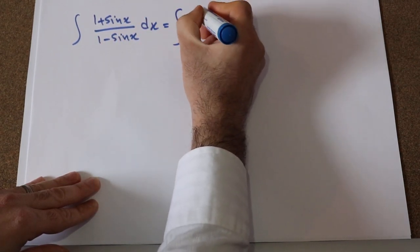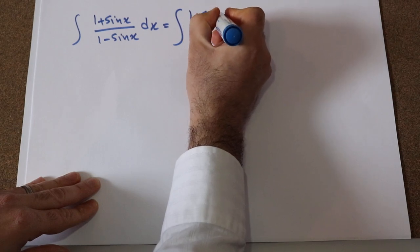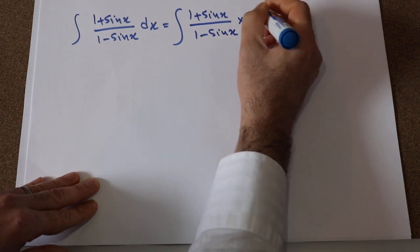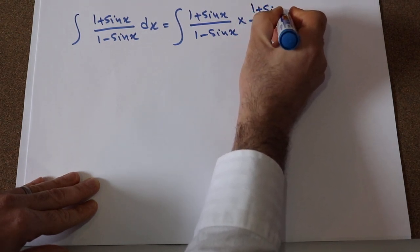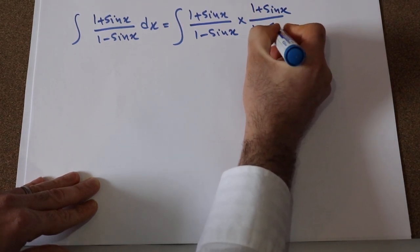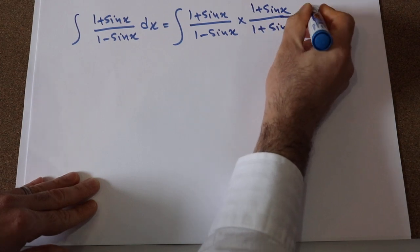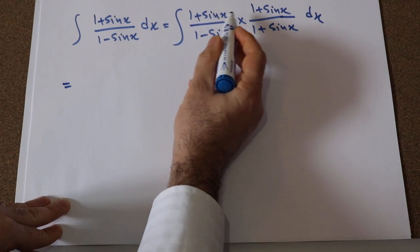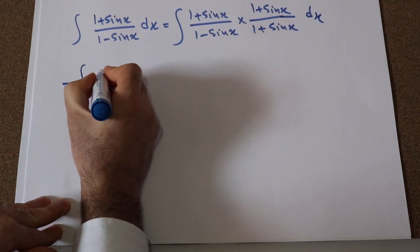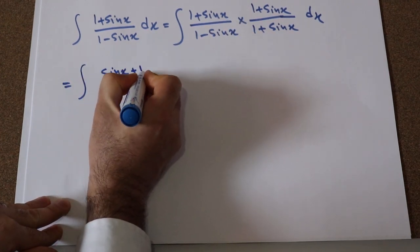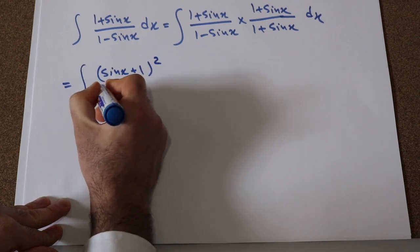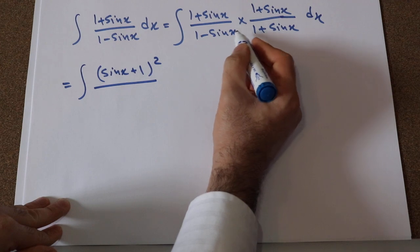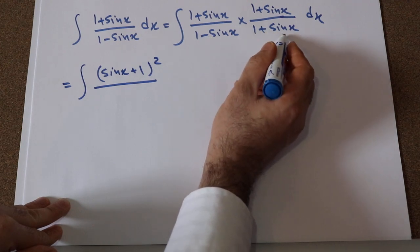You can rewrite this integral as (1 + sin x)/(1 - sin x) times (1 + sin x)/(1 + sin x) dx. This gives us (1 + sin x)² in the numerator, since (1 + sin x)(1 + sin x) = (sin x + 1)², divided by (1 - sin x)(1 + sin x).